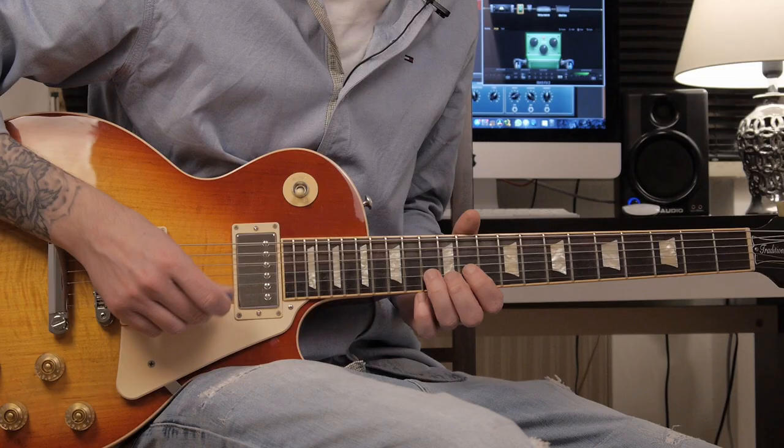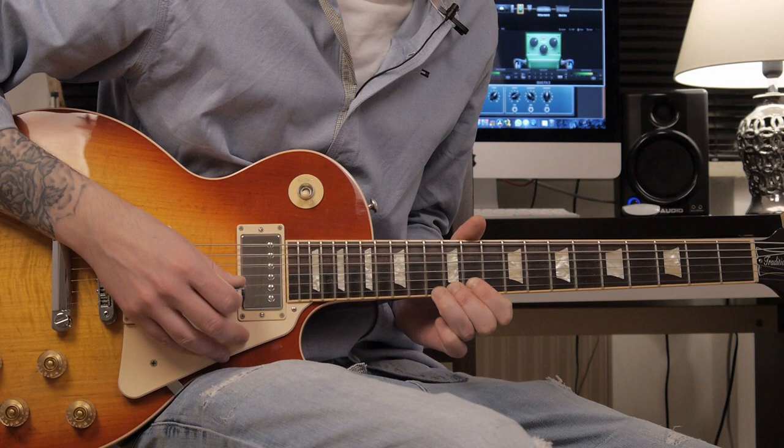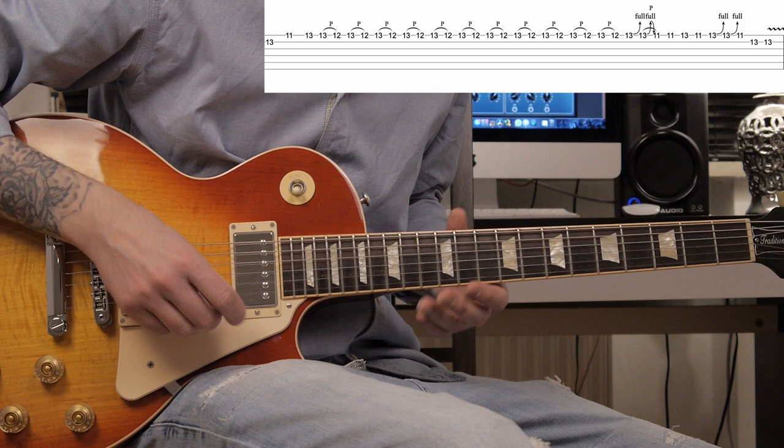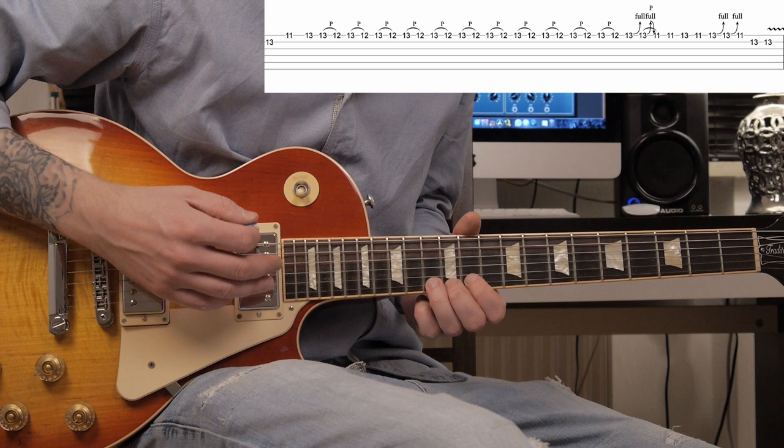And the second Freddie King signature lick: 11, 13 on the high E string. And now there's a lot of pull-offs from 13 to 12 on the high E string.